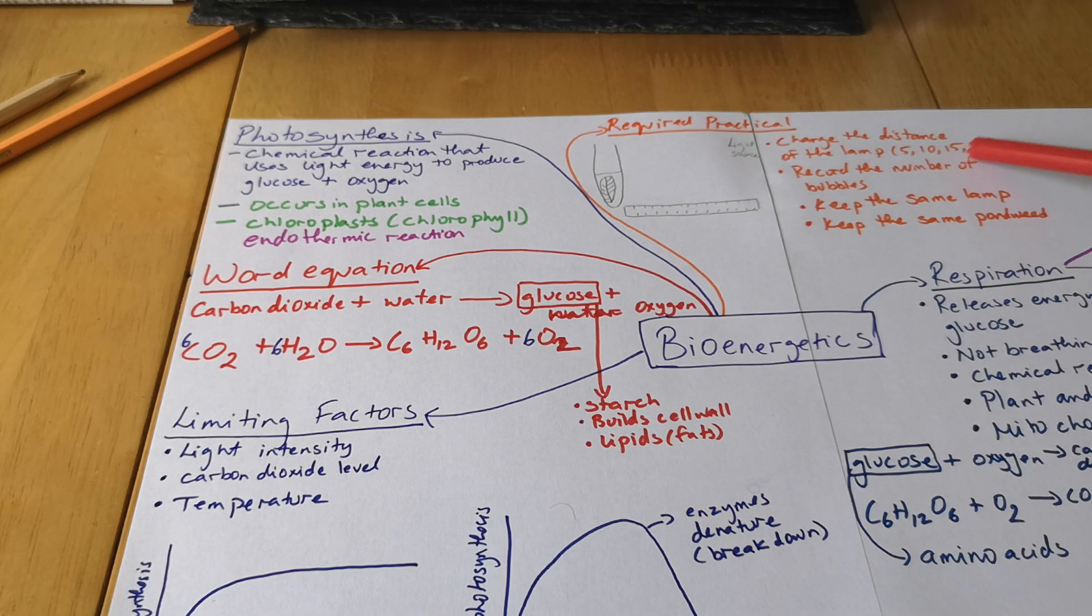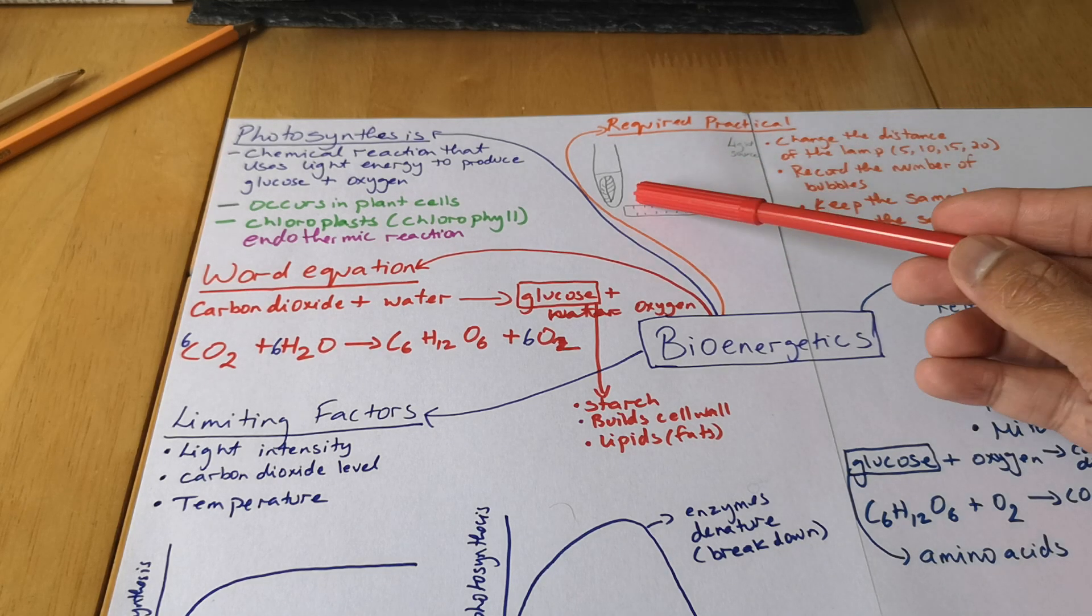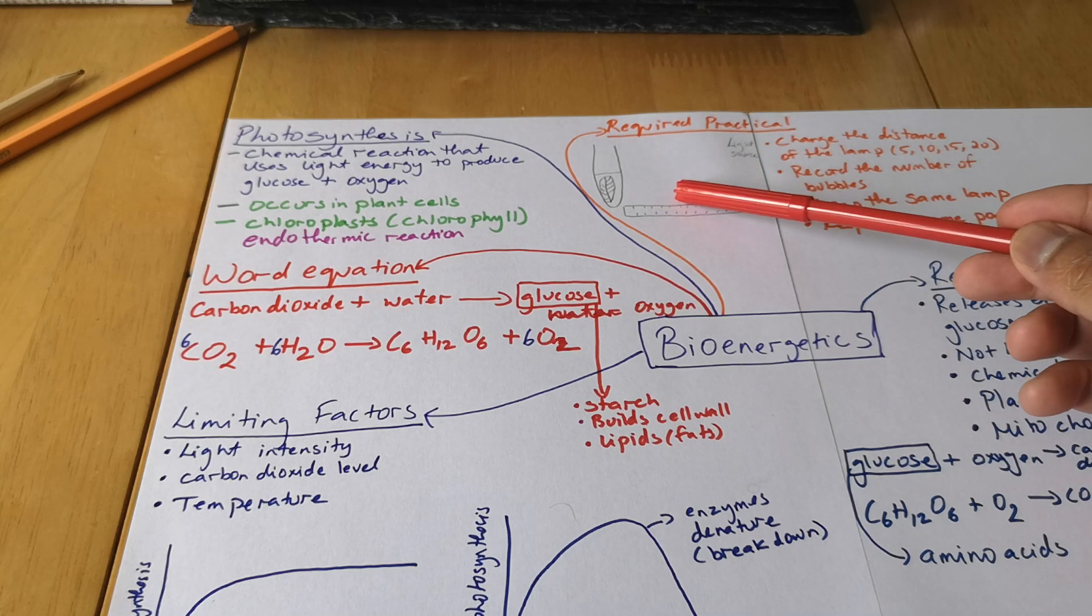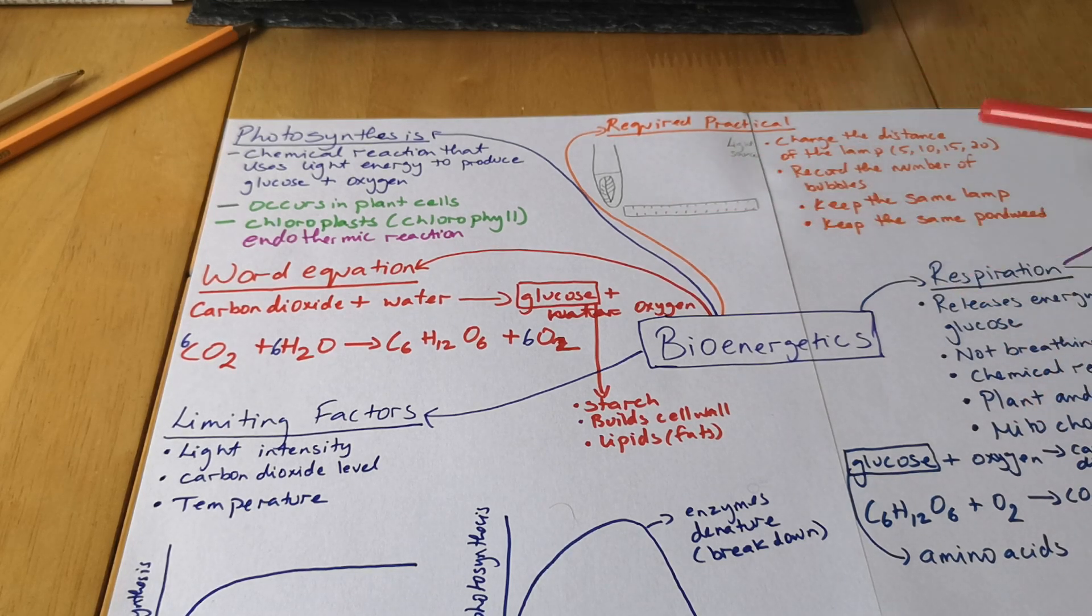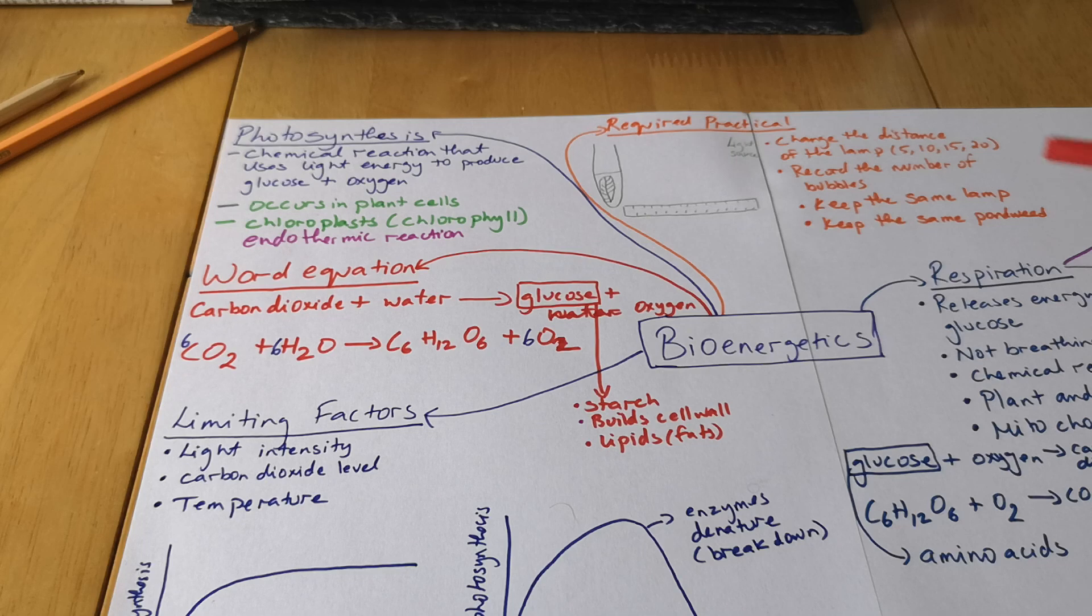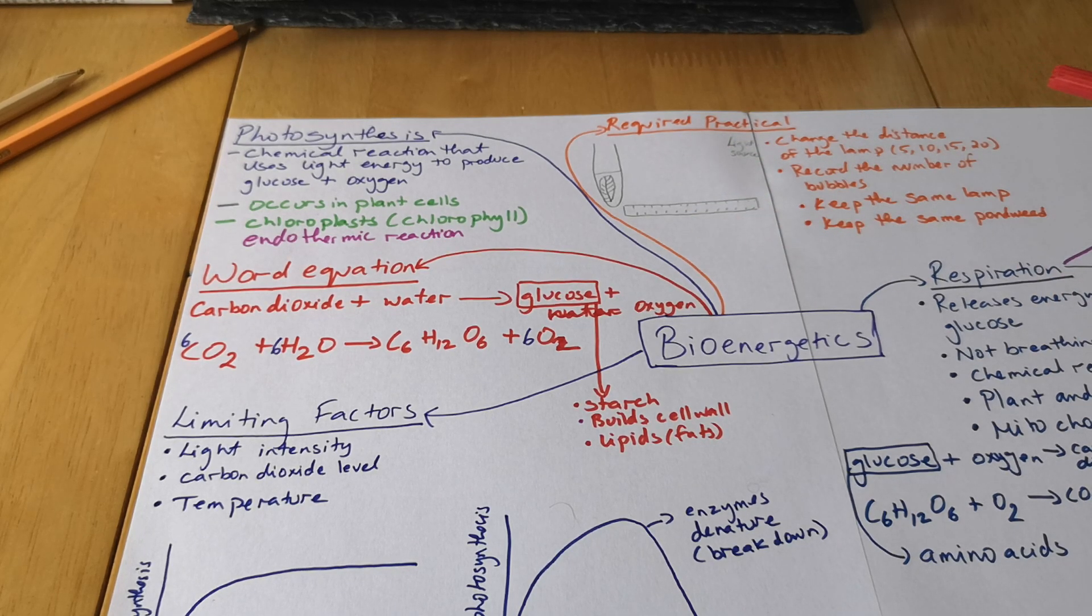What are we going to change? You're going to change the distance, so you're going to go 5, 10, 15, 20 centimeters. You're then going to record the number of bubbles. You're going to keep the light source there for a minute or two, record it, change, do the same. Keep the same lamp, keep the same pond weed.